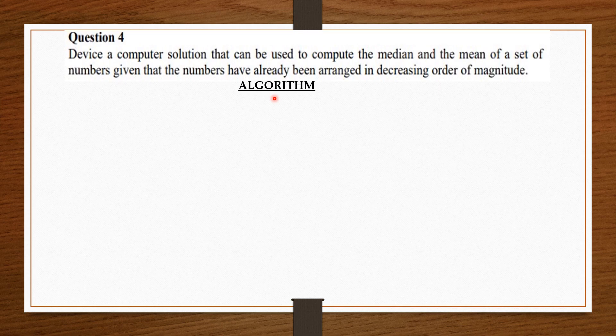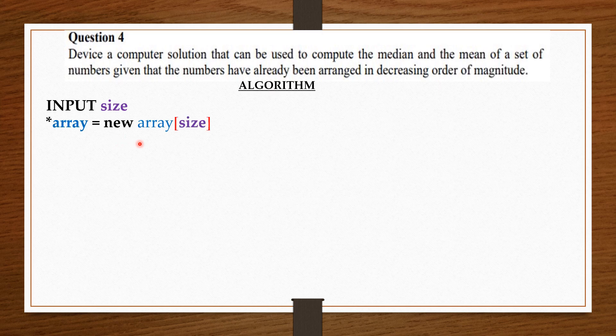Since we are to find the mean and the median, we must know the size of the set of numbers. So we ask the user to enter the size of the set of numbers. Knowing the size of the set, we are going to create memory spaces in an array that fits just the size the user entered. We do that by dereferencing the array. I will explain this further as we go along. Because we are going to sum the numbers in the set, we create an empty variable called sum that will store the sum of the numbers in the set.